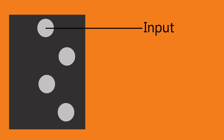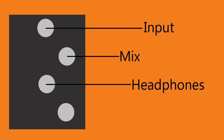All interfaces will have four basic controls: an input knob to control the volume of the microphone or instrument plugged into it; a mix control knob to control the ratio of what you hear between the input and the software; a headphone volume control knob; and a line out volume control knob, which controls the volume of the signal from the interface to the software.